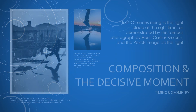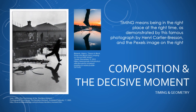Now we get to the fun part — composition and the decisive moment, which covers timing and geometry. Timing means being in the right place at the right time, as demonstrated by a famous photograph by Henri Cartier-Bresson. The Henri Cartier-Bresson image is one of the earliest photographs where we see photographers thinking critically about when to take the picture — before anything happens, or mid-action. Here he takes it just the moment before the foot touches the water, while the image on the right captures the moment after, with a dynamic splash. Both are very captivating and demonstrate that timing is really important.